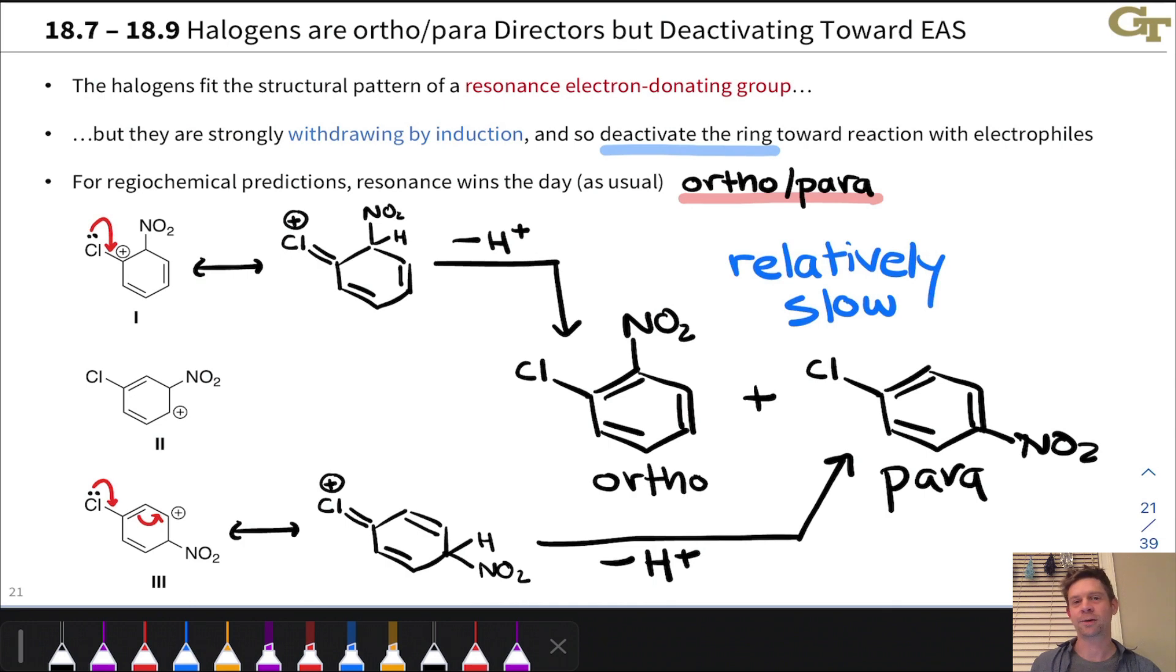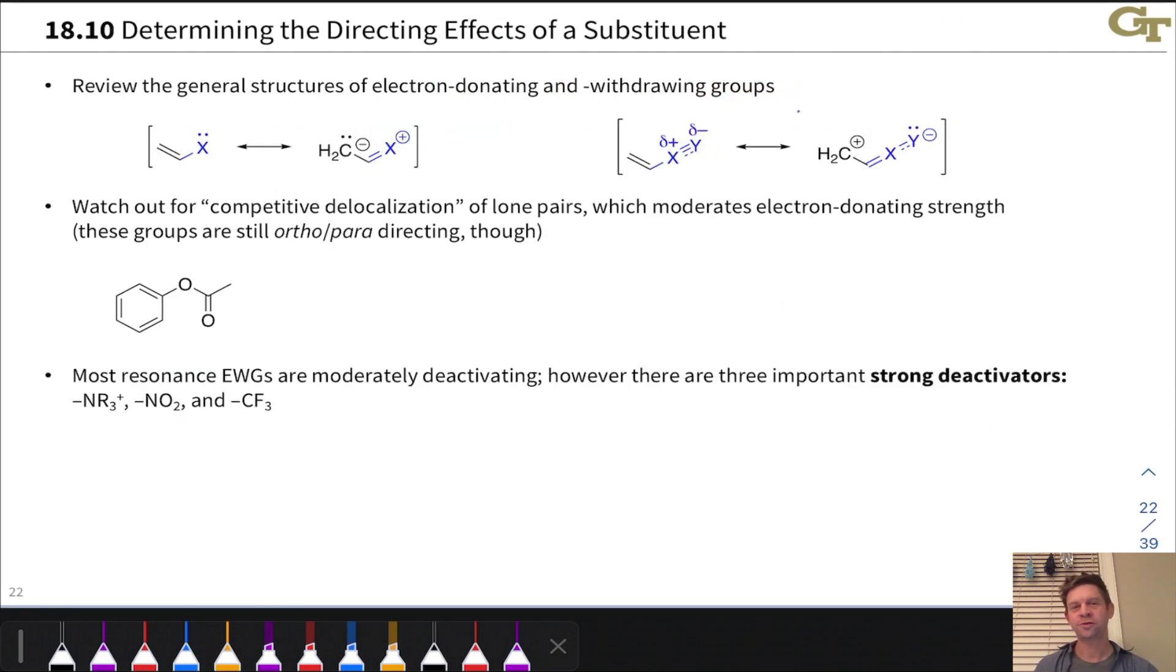The preceding discussion has shown us that electron-donating groups by resonance are ortho-para directors, while electron-withdrawing groups by resonance or by induction are meta directors.